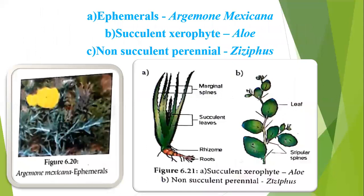Some examples of xerophyte plants by category: first, ephemeral — Argemone mexicana; second, succulent xerophyte — Aloe; third, non-succulent perennial — Zingiber.